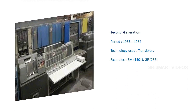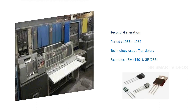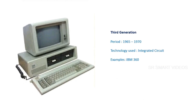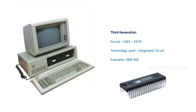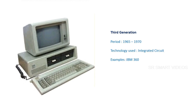The second generation period is considered from 1955 to 1964. The main technology used was transistors. Some examples of second generation computers are IBM 1401 and GE 235. The third generation period is considered from 1965 to 1970. The main technology used was integrated circuits. An example of a third generation computer is the IBM 360.